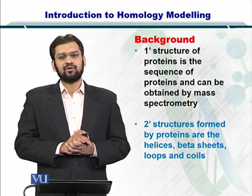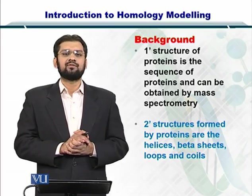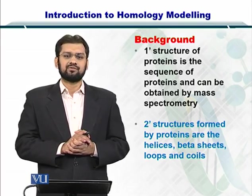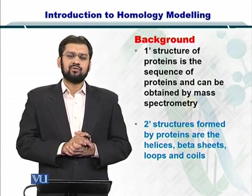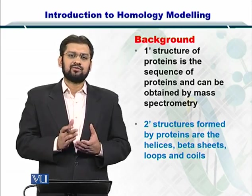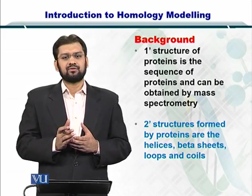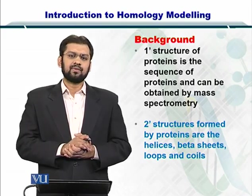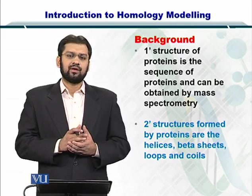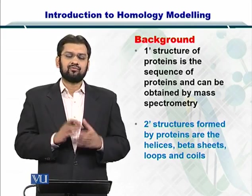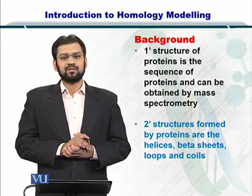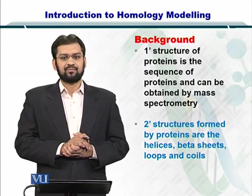Next, you have the secondary structures of proteins. The secondary structures include helices, beta sheets, loops, and coils. These structures are formed when the primary sequence of the proteins comes together and folds to take these three-dimensional shapes.